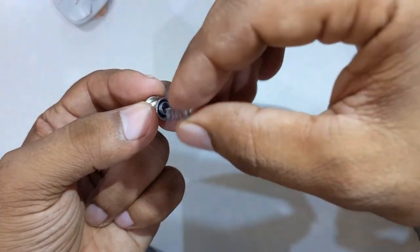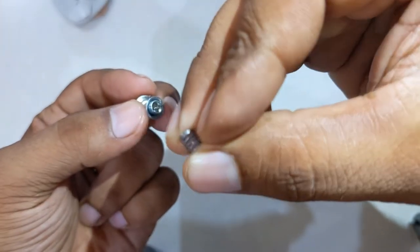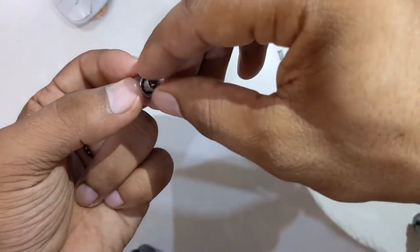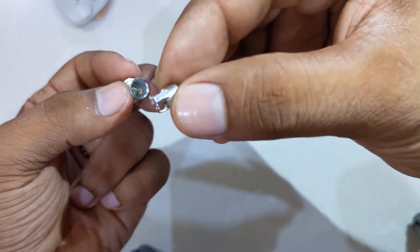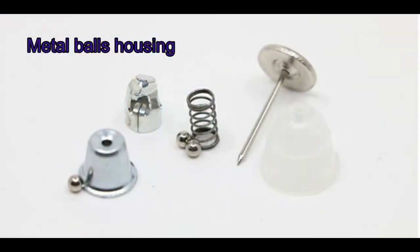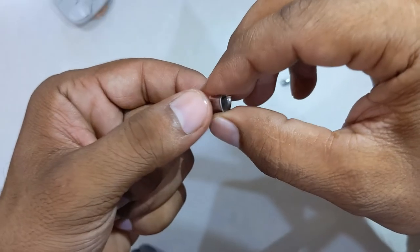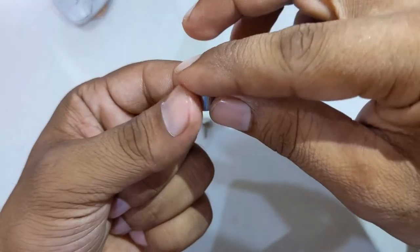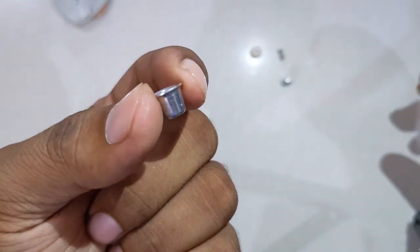It has got a plastic housing to accommodate this mechanism, a spring, and a metal ball housing. This housing holds three metal balls in place. Inside it we have a cup-shaped body which is convergent from below and wider from above.